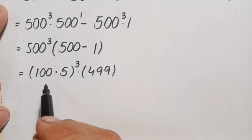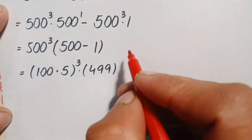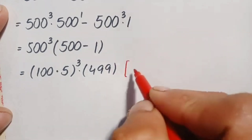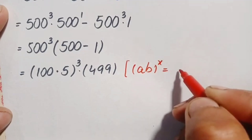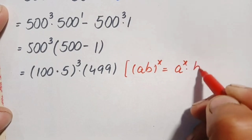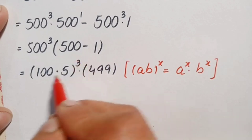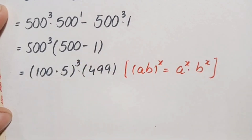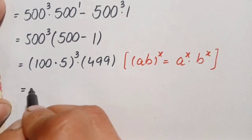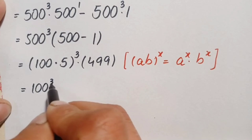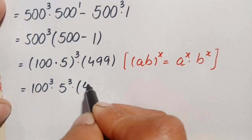Next we use another exponential identity: (a times b) raised to power n equals a raised to power n times b raised to power n. Applying this identity to the first number, we spread the cube power over 100 and 5 separately. This becomes 100 to the power 3 times 5 to the power 3, and the second number remains 499.